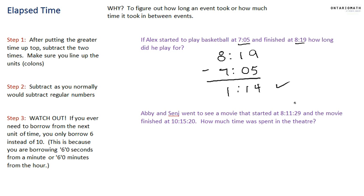Too bad not everything could be that easy. Sometimes you actually need to borrow. If the smaller number is on top, you have to borrow from the next unit over. Watch out: if you ever need to borrow from the next unit of time, you only borrow 6 instead of 10. This is because you're borrowing 60 seconds from a minute or 60 minutes from the hour.